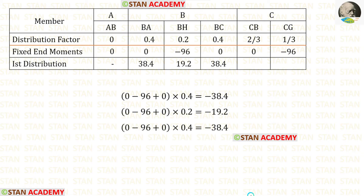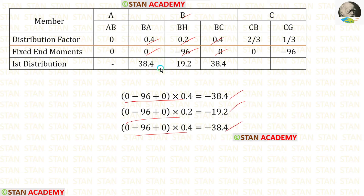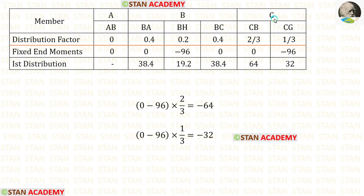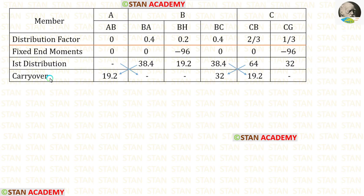Now let us do the first distribution. First, let us do joint B — we add the three values and multiply with the distribution factors. We get negative values, so we enter them as positive inside the table. Now let us do the distribution at joint C — we add the two values and multiply with the distribution factors. We get negative values, so we enter them as positive. Now let us do the carry-over by dividing these values by 2 and entering the answers.